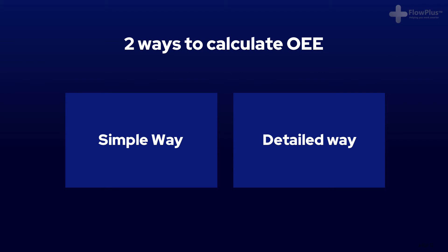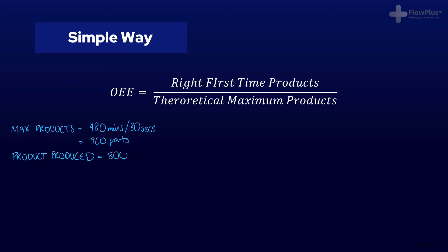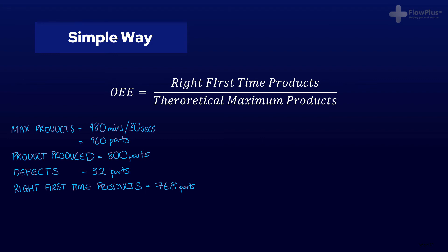OEE can be calculated in two different ways: the simple way and the more complex but also valuable way. The simple way is to compare the number of right-first-time products produced with the theoretical maximum number of products produced. For example, in a given shift of 8 hours or 480 minutes, in a perfect world a machine would be capable of producing 960 parts — that's one every 30 seconds. If due to breakdowns, changeovers, and slowdowns it can only produce 800 parts, and out of those 800, 32 are defective, then the machine has produced only 768 right-first-time products out of a potential 960.